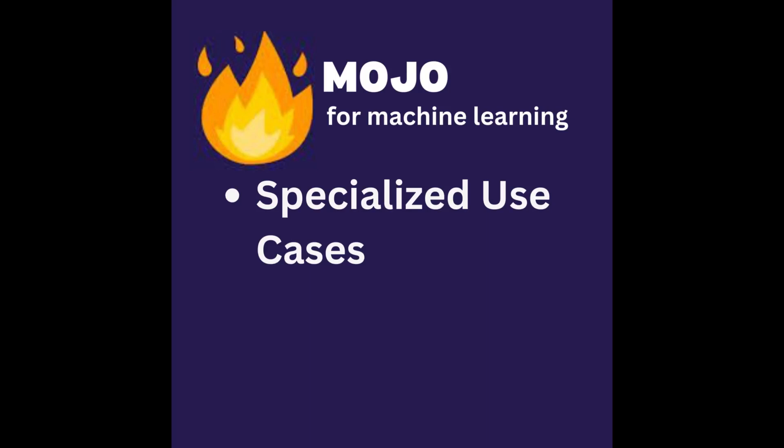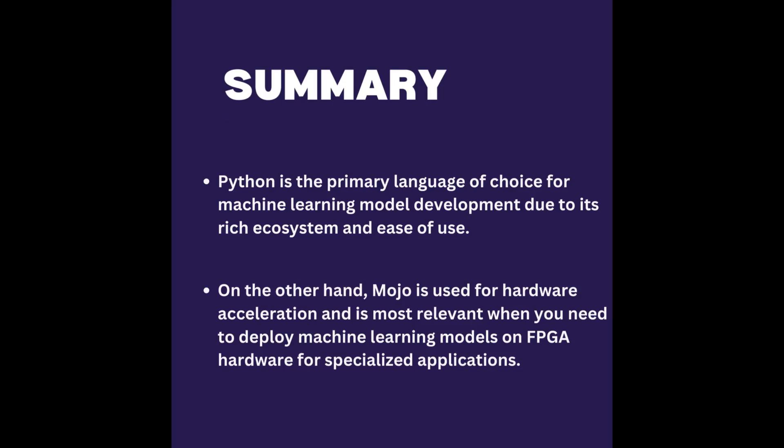It is basically for deploying machine learning models because of speed, CPU and GPU speeds. In conclusion, Python is the primary language of choice for machine learning model development due to its rich ecosystem and ease of use. On the other hand, Mojo is used for hardware acceleration and is most relevant when you need to deploy machine learning models on FPGA hardware for specialized applications. Typically, they are used together — Python to develop the machine learning model and Mojo to deploy the model on custom hardware for optimized performance.